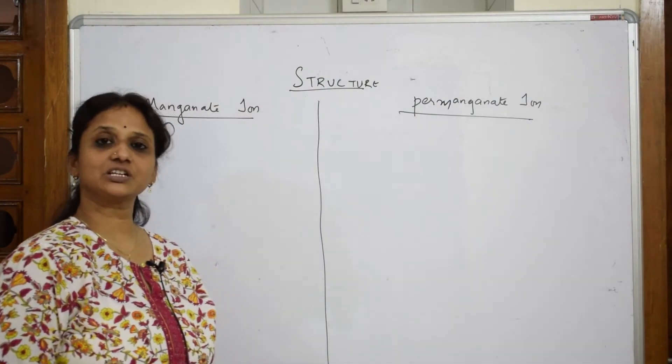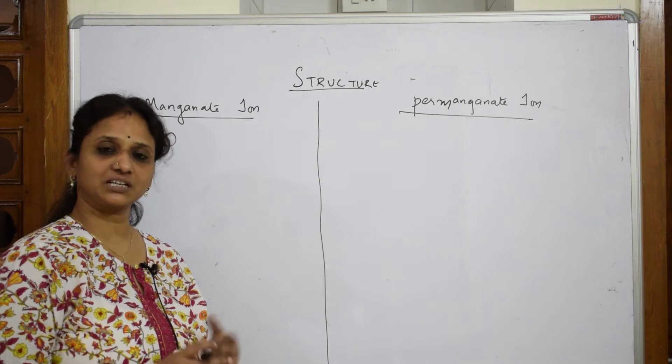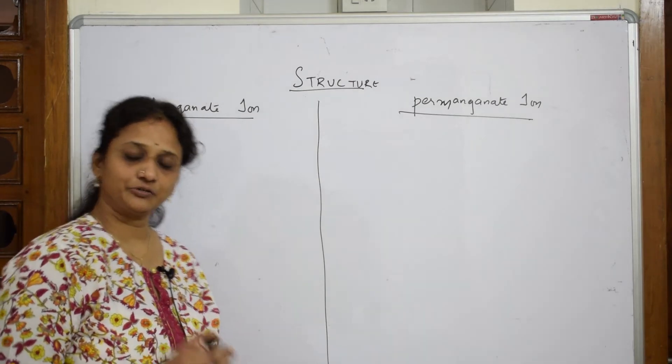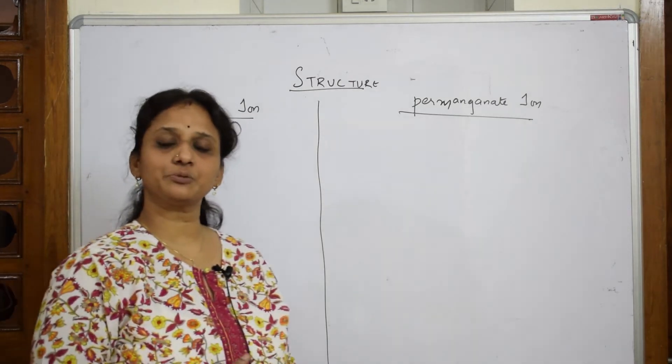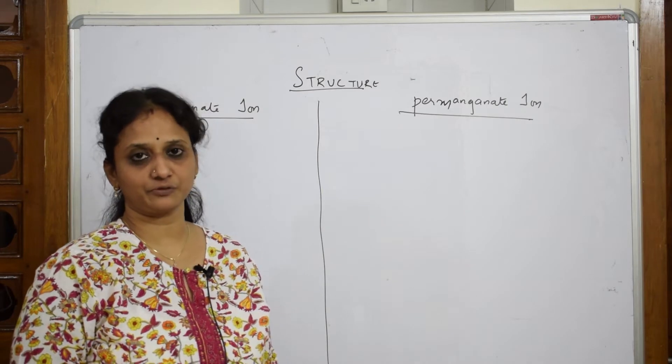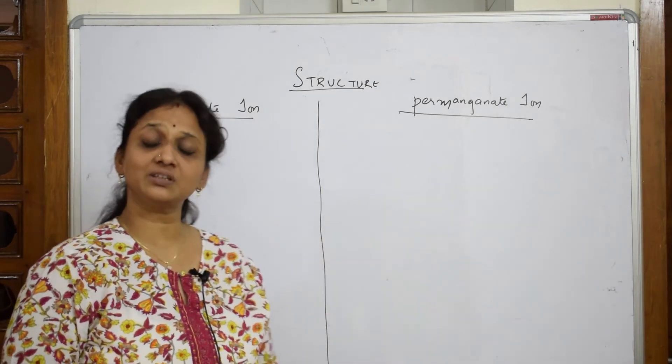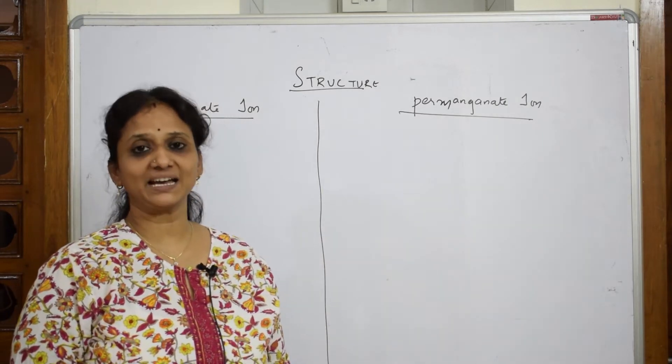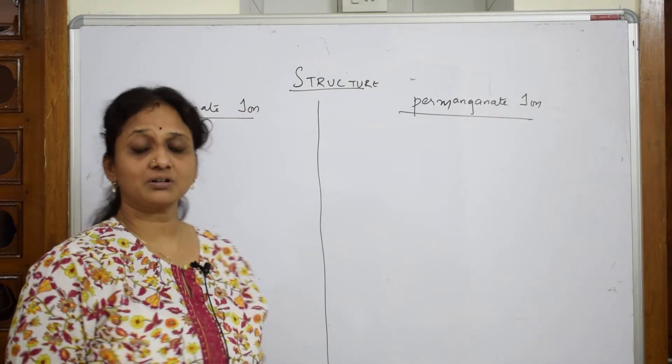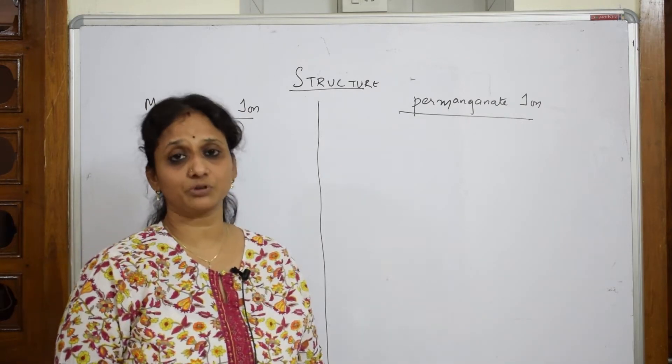Let us come back and learn the structures. Till now we have learned the preparations for commercial method, lab method of KMnO4. We have also done the chemical properties, the oxidizing properties of KMnO4. Let us end the topic with structure of manganate and permanganate. Very important in your d-block, structures are very important. Please do practice it.